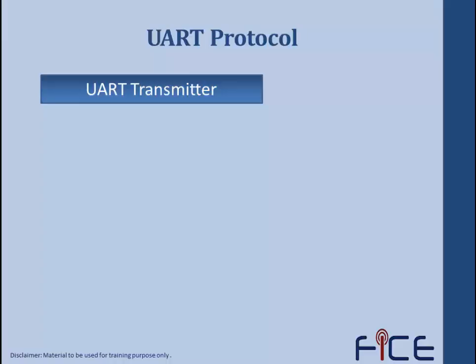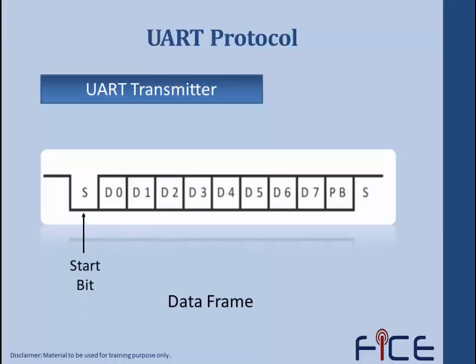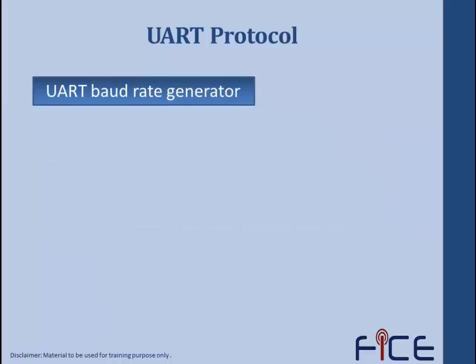The UART transmitter transmits data in a data frame format. The data frame has a start bit and a stop bit. The start bit indicates that the transmitter is ready to transmit data, while the stop bit indicates that the data stream has been completely transmitted. The parity bit is an optional bit used to distinguish whether the data stream is an address or data. Between the start bit and the stop bit, an 8-bit data payload is transmitted.